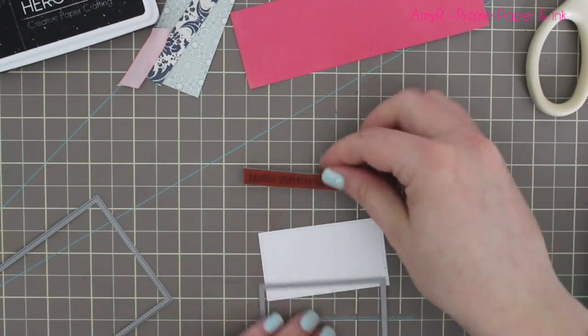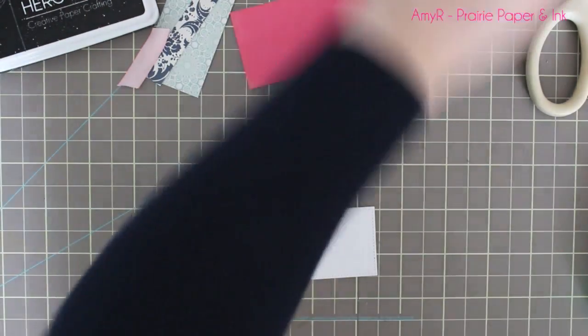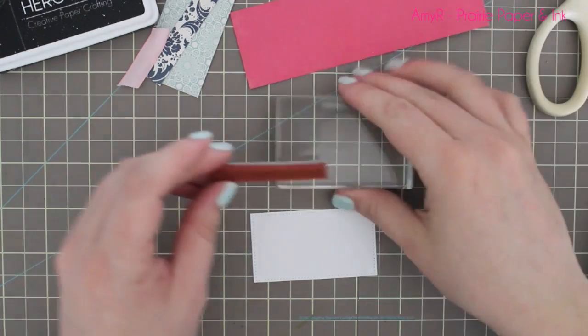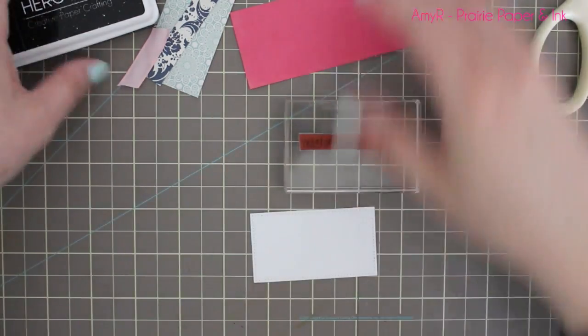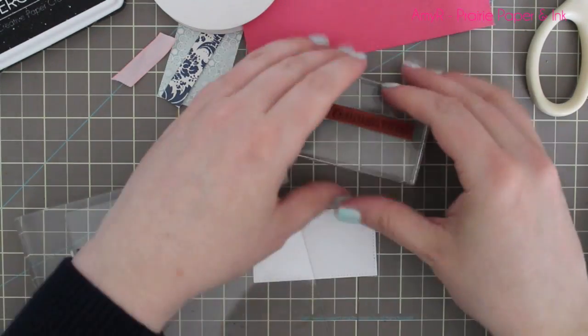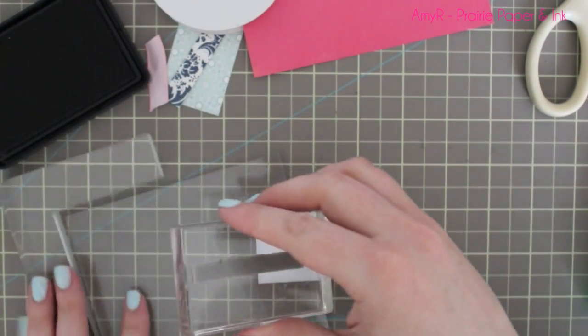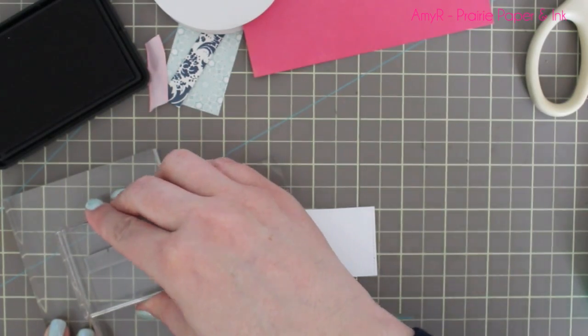For the inside of the card, I just trimmed down some of the remaining pieces of pattern paper that I had left over from the front, and I die cut another little white rectangle with the Pierced Rectangle die-namics. I'm going to use another stamp from my All About Mom set—this is the Happy Mother's Day stamp.